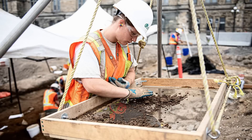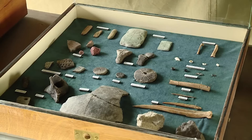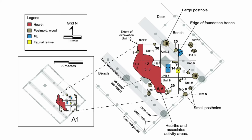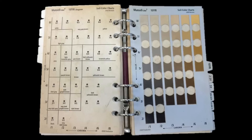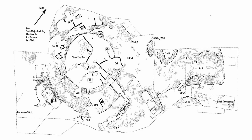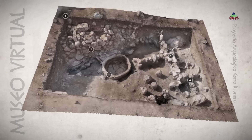The dirt from each layer is also sifted to ensure that no small artifacts are missed. Artifacts are then collected and brought back to laboratories for analysis. Features and stratigraphic changes are also recorded. Munsells are used at each layer to determine which stratigraphic layer the level exists in. In the past, each level was hand-drawn with artifacts and features being drawn in. Recently, many archaeological excavations have begun using photos or 3D imaging to record levels.